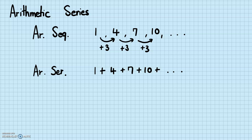For arithmetic sequences, if you remember, we had a formula for finding the nth term. We called the nth term a_n, and that equals a₁ plus (n minus 1) times d, where a₁ is the first term and d is the common difference. So for example, if you wanted to find the 100th term of this arithmetic sequence, we can just simply plug those values in.